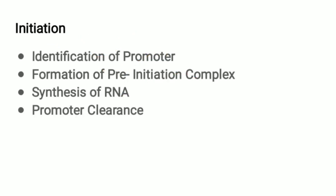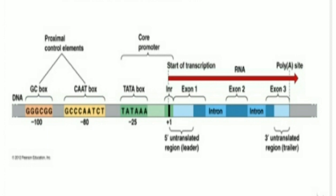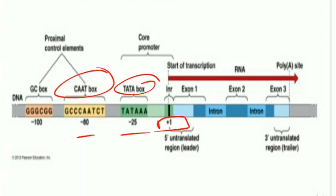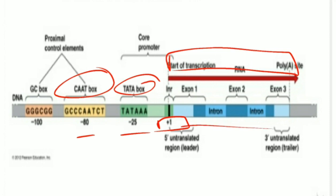Eukaryotic transcription consists of three steps: initiation, elongation, and termination. Initiation involves identification of the promoter, formation of the pre-initiation complex, synthesis of RNA, and then promoter clearance. The CAT box is at the minus-80 region and the TATA box is at minus-25. The plus-1 region is the initiation sequence — this is where the actual transcription starts.